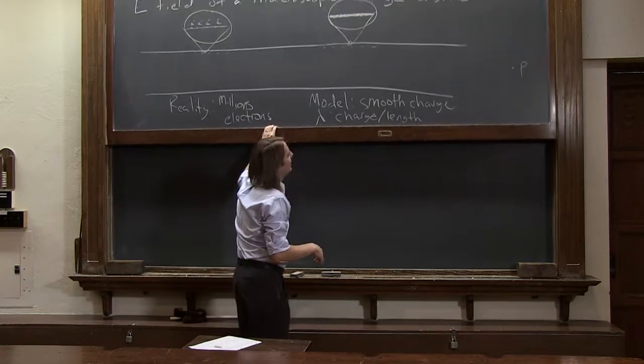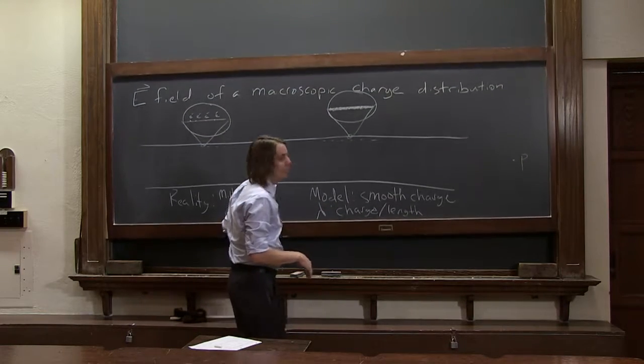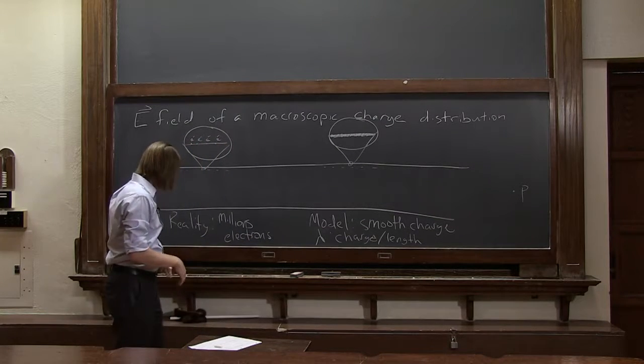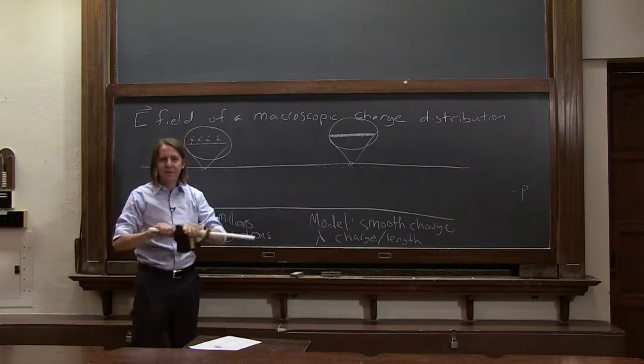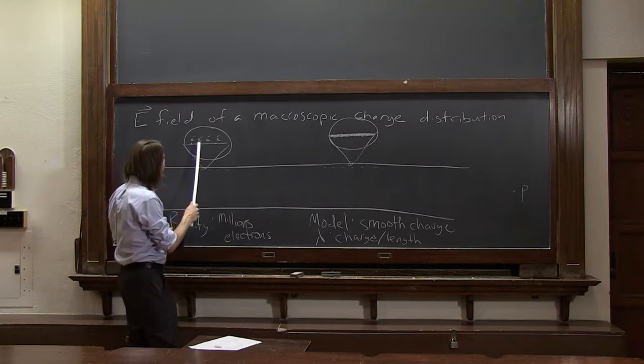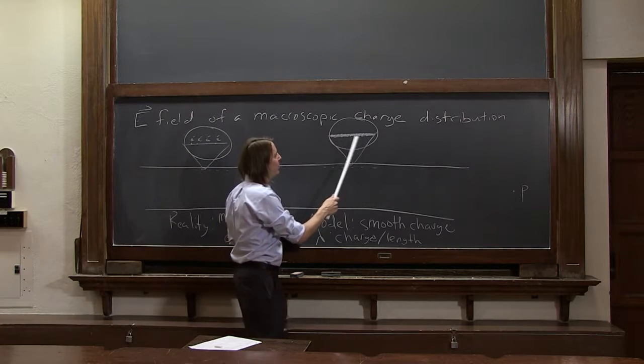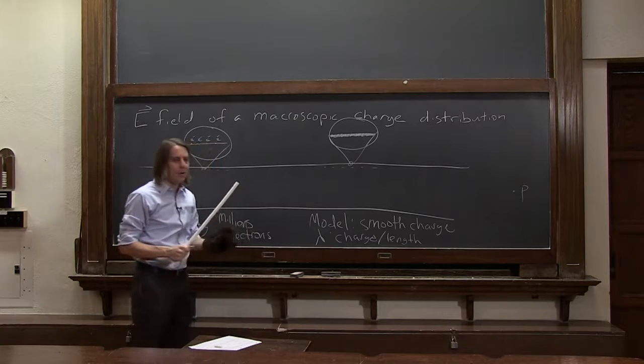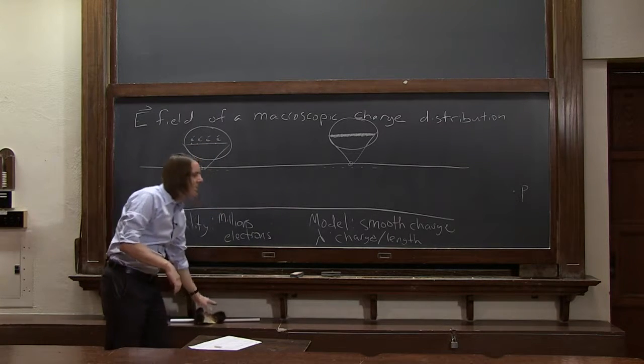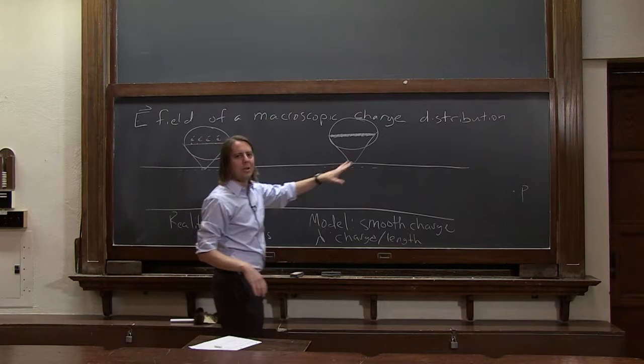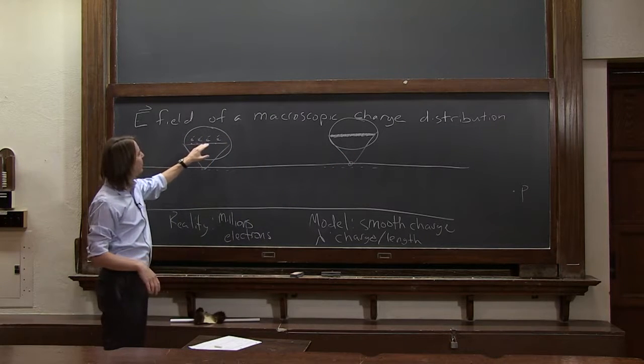Will the charges be evenly spaced? And the answer is probably not. So when I rub the rod with the fur, I get patches of charges here and there. I don't necessarily get them perfectly evenly spaced, which would be perfectly described by this model. And it's true, models are never perfect, OK? When we use a model, we're making an approximation just to make the problem solvable. But it is highly unlikely that the electrons are perfectly smooth.